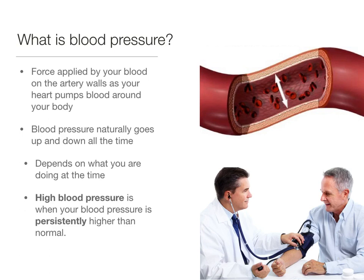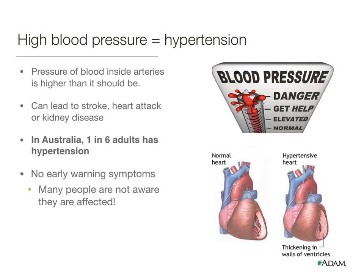High blood pressure is when your blood pressure is persistently higher than normal. Hypertension occurs when the pressure of blood inside arteries is higher than it should be, and this can lead to stroke, heart attack, and kidney disease. In Australia, one in six adults lives with hypertension. It has no early warning symptoms and therefore many people are not aware they are affected.